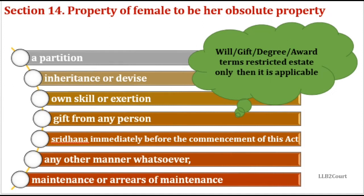Section 14 prescribes that the property of a female is no longer a limited estate but an absolute property. Absolute ownership means she can alienate the property by sale, gift, or anything she wants — there are no restrictions. But in a limited estate or life estate, there are restrictions.